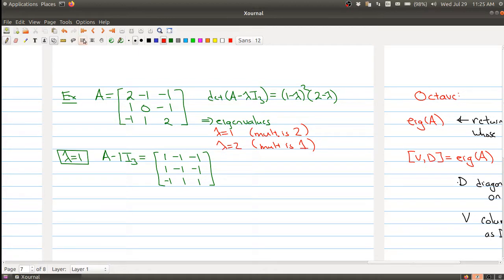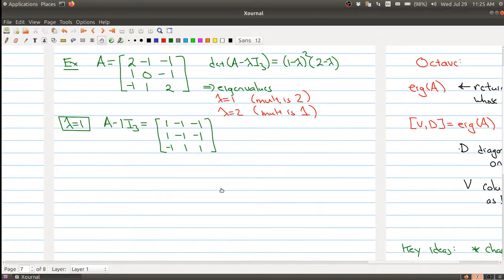Now what I want to do is show you something that can happen when you're looking for eigenvectors. Let's look at the case of lambda equals 1 in more detail. We just follow the same procedure from the last part.